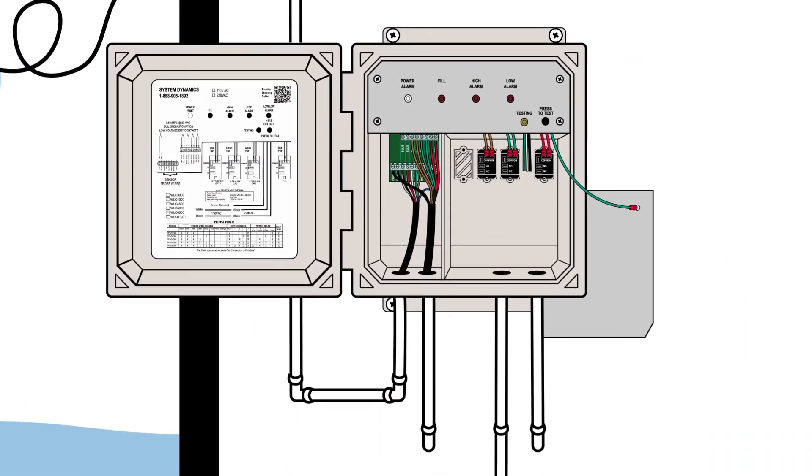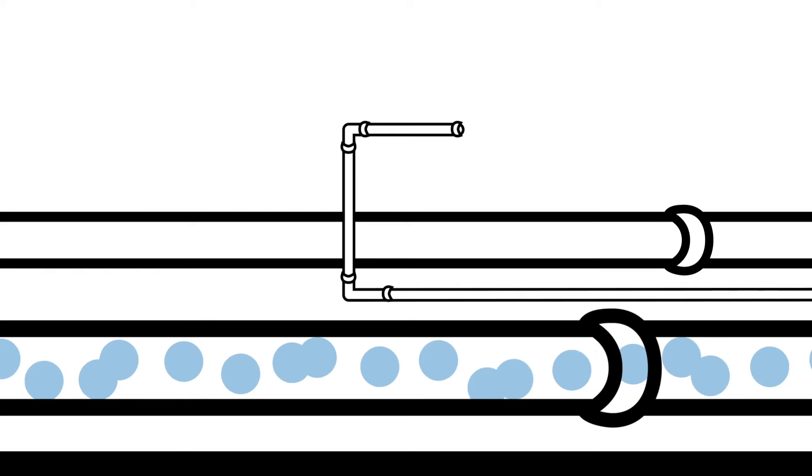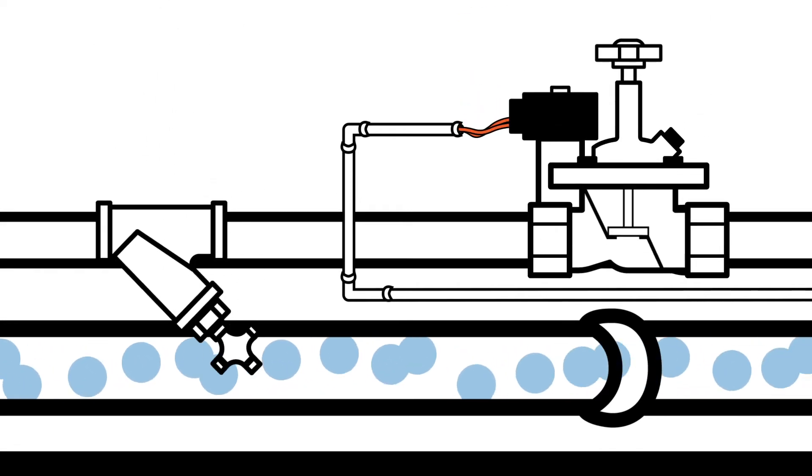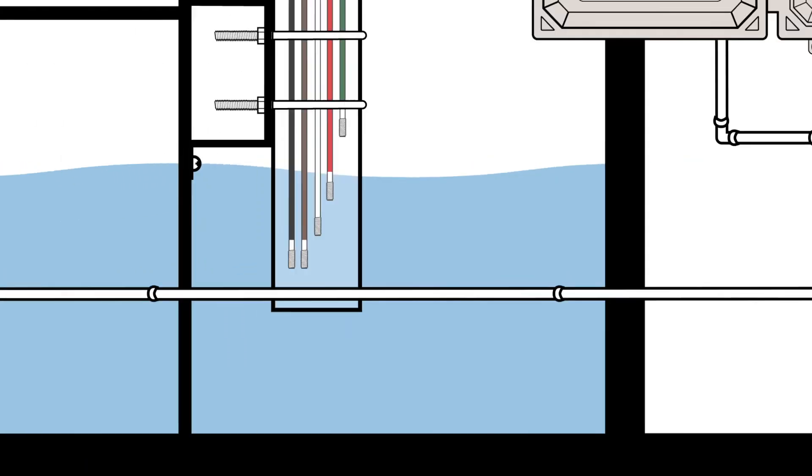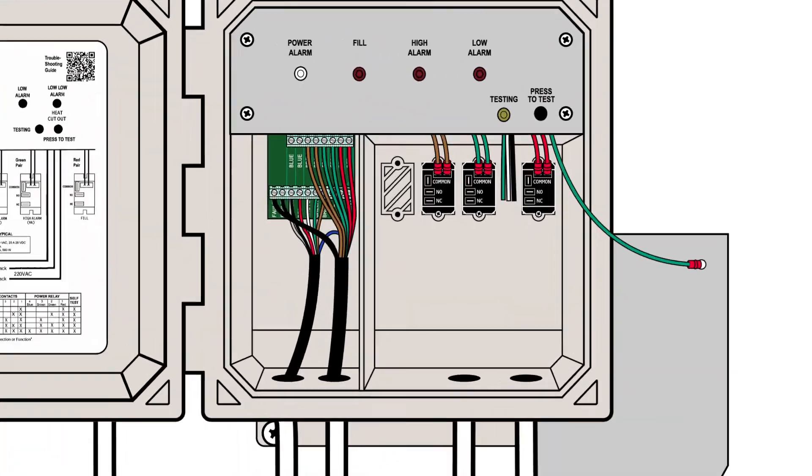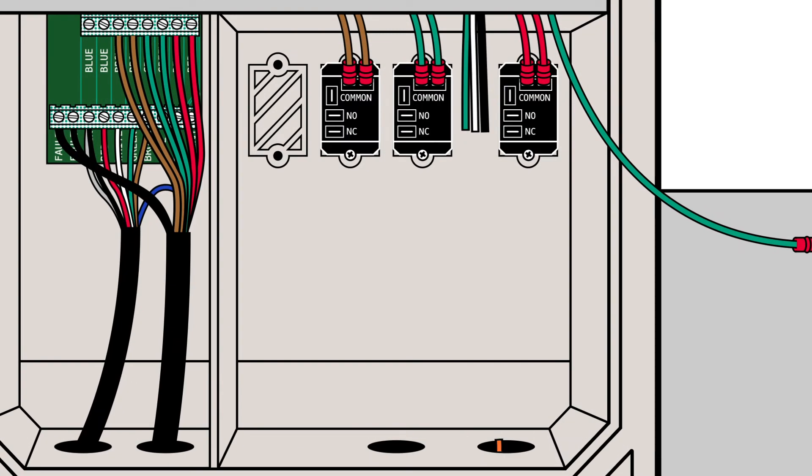When running the conduit for the valve connection, locate the placement of both the valve and the Y-strainer. Run your valve connections through the conduit into the high voltage area. They are represented here with orange wires.